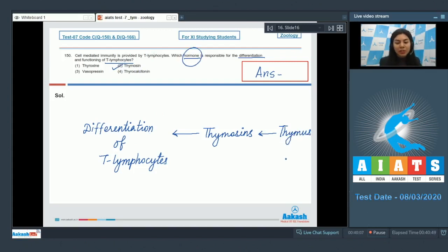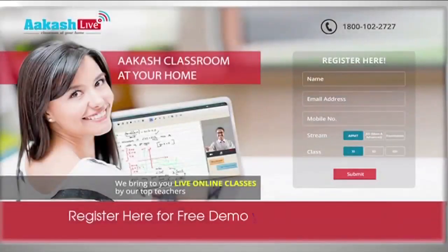Option 1, thyroxin regulates basal metabolic rate. Vasopressin affects glomerular filtration rate and sodium absorption and water conservation. Option 4, thyrocalcitonin is hypocalcemic, maintaining and regulating calcium balance in the blood. The correct answer is option 2, thymosin. Thank you.